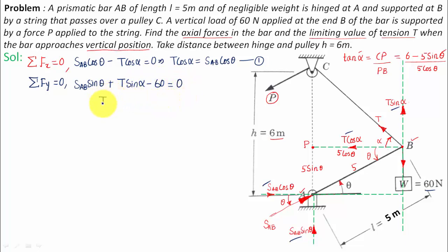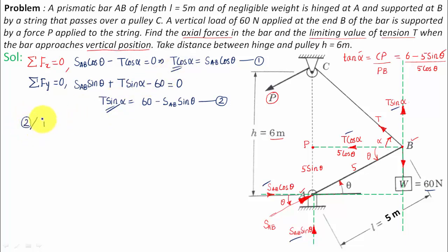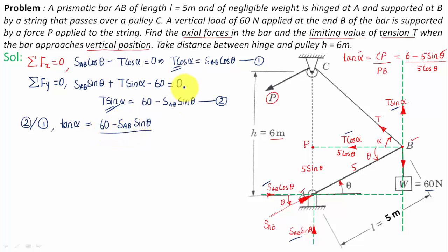From ΣFy = 0, Equation 2 gives: T·sinα equals 60 minus S_AB·sinθ. Dividing Equation 2 by Equation 1, T and T cancel, and sinα/cosα gives tan α, so tan α equals (60 minus S_AB·sinθ) divided by (S_AB·cosθ).